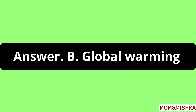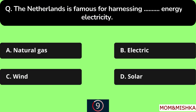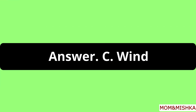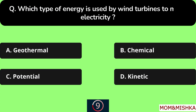The Kyoto Protocol deals with global warming, option B. The Netherlands is famous for harnessing blank energy to electricity — wind energy, option C. Which type of energy is used by wind turbines to make electricity?